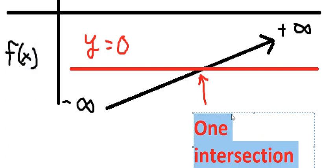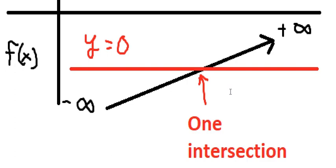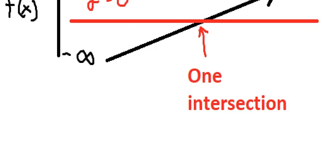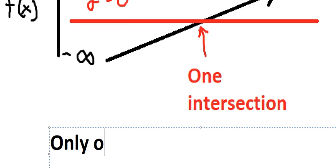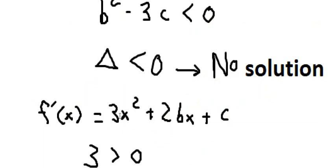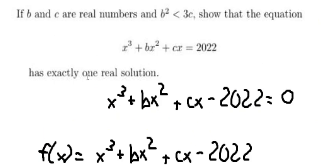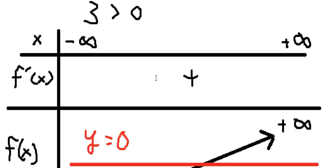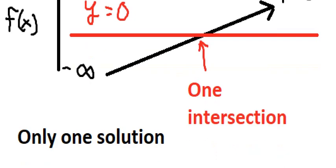Because we have only one intersection, that means we have only one solution. And this is the technique to show that this equation has exactly one real solution. This is the end, thank you for watching.